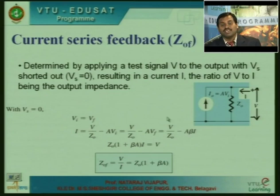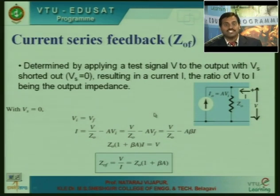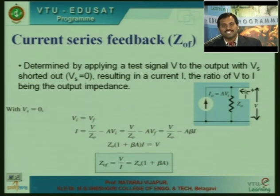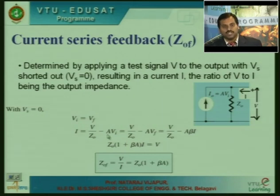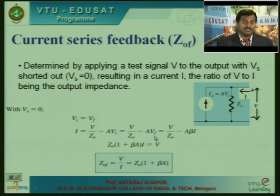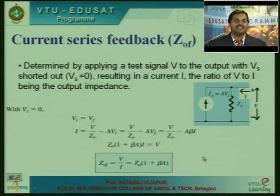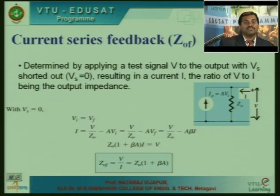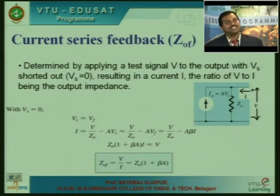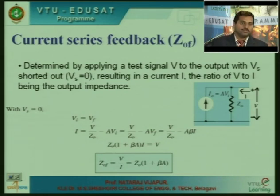With V_s = 0, the current I can be expressed using current division: I = V/Z_0 − A×V_i. Substituting V_i = V_f since V_s = 0, and solving, we get output impedance Z_of = Z_0 × (1 + Aβ). This gives us the closed-loop output impedance for current series feedback, completing the determination of gain, input impedance, and output impedance for the closed-loop amplifier.